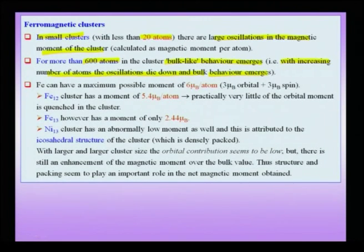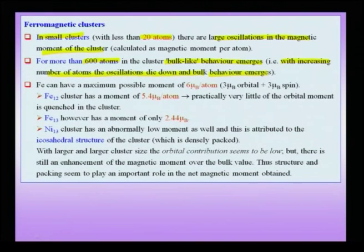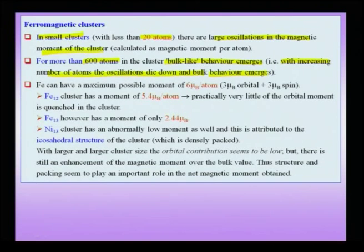We have two or three size regimes: small clusters having typically fewer than about 20 to 50 atoms, large clusters from about 50 to 600 atoms, and finally the bulk behavior wherein the magnetic moment approaches that of bulk iron.